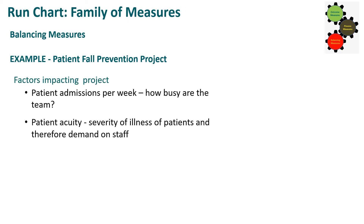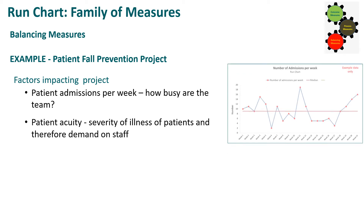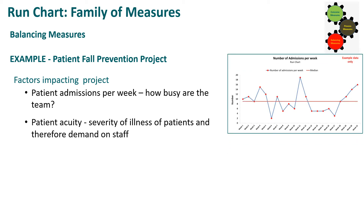Looking at balancing measures for our patient fall prevention project, there may be some factors impacting the project, such as patient admissions per week — in other words, how busy is the team because of the number of admissions they're receiving each week — or patient acuity, the severity of illness of patients and therefore the amount of demand on staff. This chart shows the number of admissions per week. There may also be balancing measures focusing on the impact of the project, such as the impact on staff satisfaction.